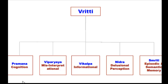In between these things, we predominantly transact at the viparyaya level — the misinterpretational level. Vikalpa is about informational ideas: Mars is red, or the Milky Way is huge and we are in a corner. Likewise, you have a heart beating that you cannot see — that is vikalpa. Similarly, having a brain is also informational.